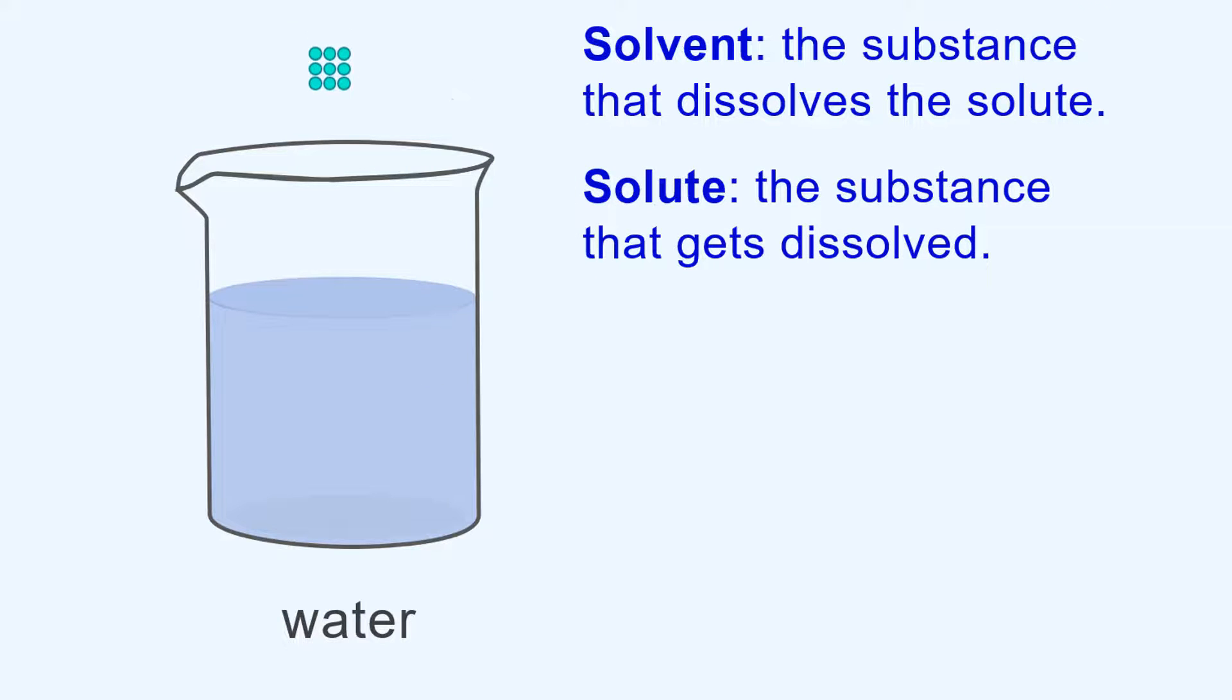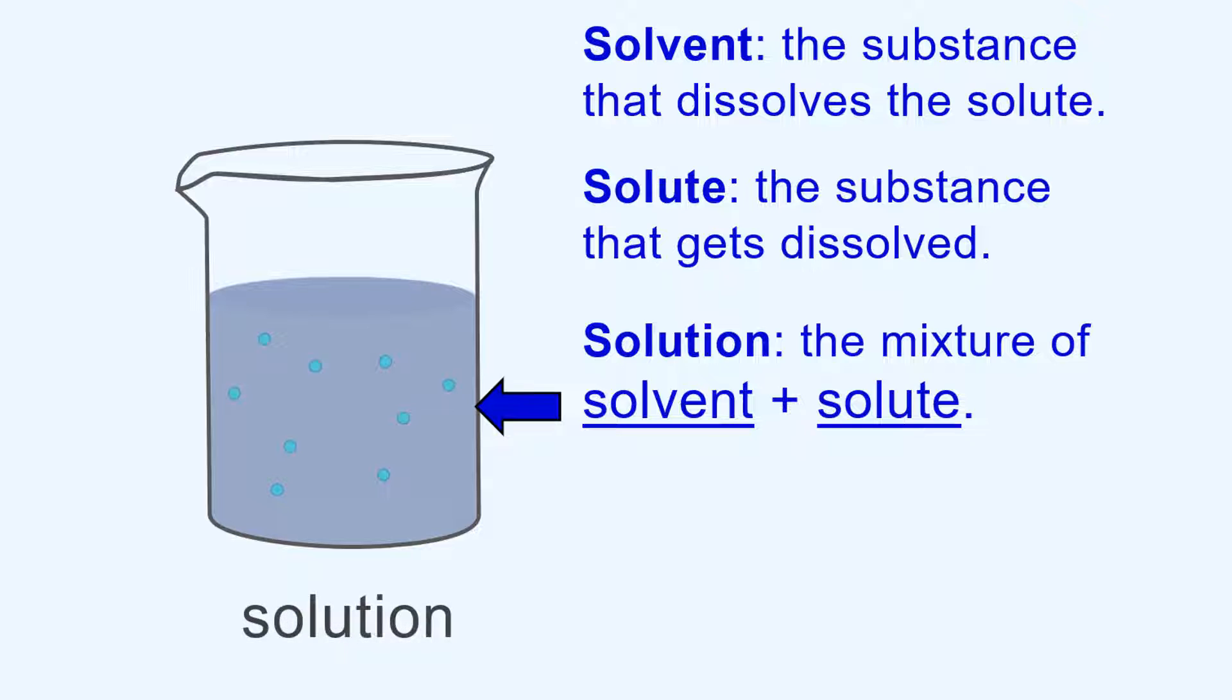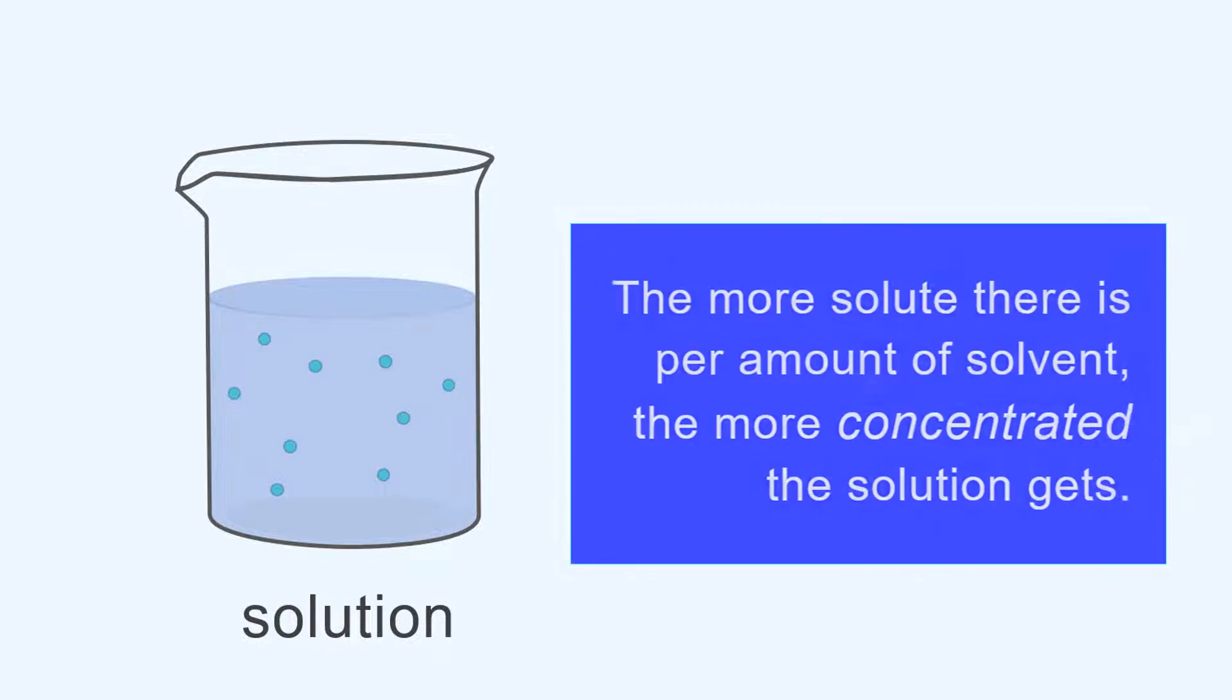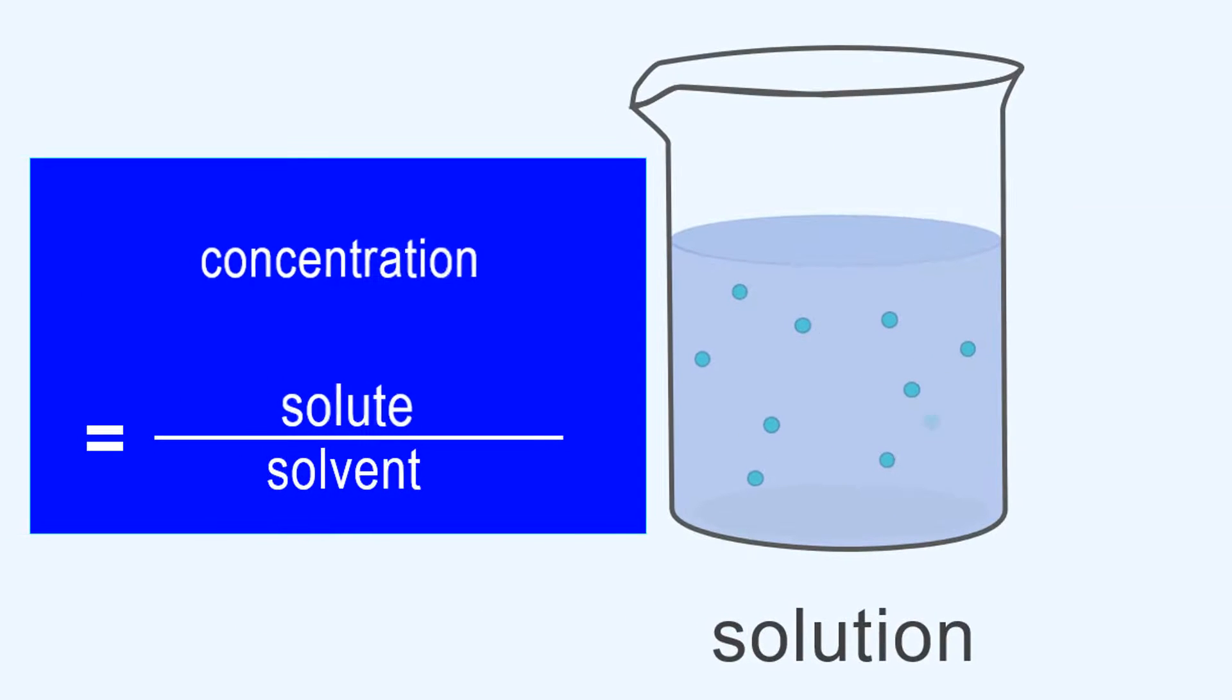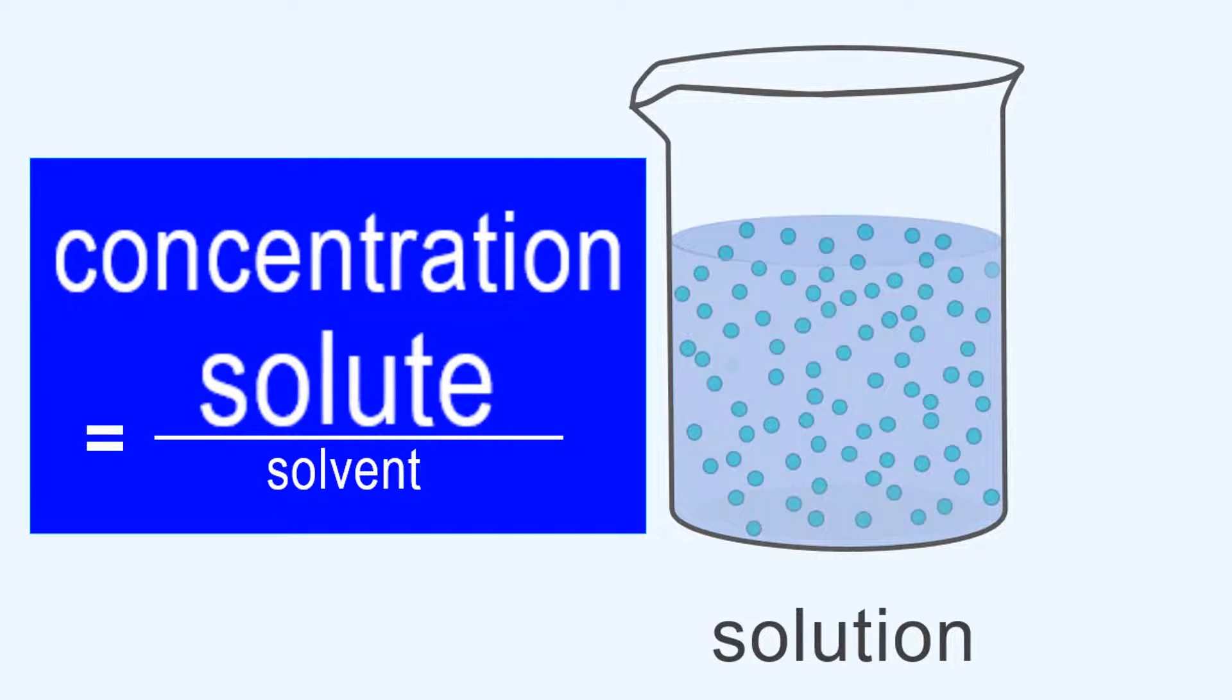Solute is the substance that gets dissolved, and solution is the mixture of the solvent and the solute. The more solute there is per amount of solvent, the more concentrated the solution gets.